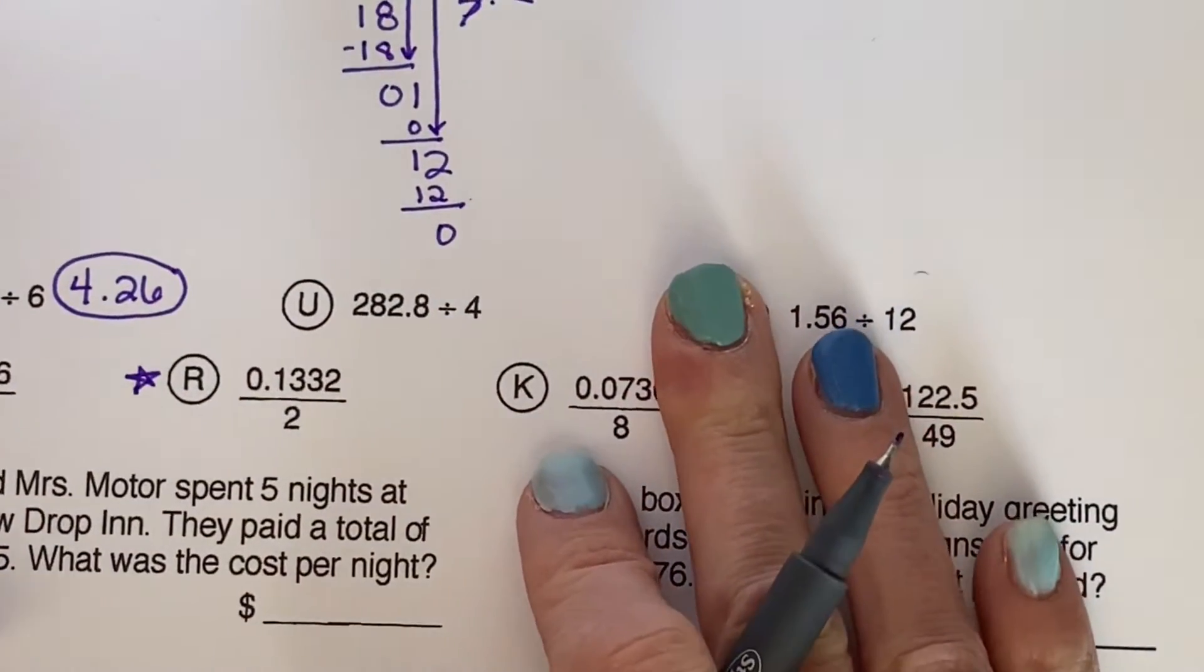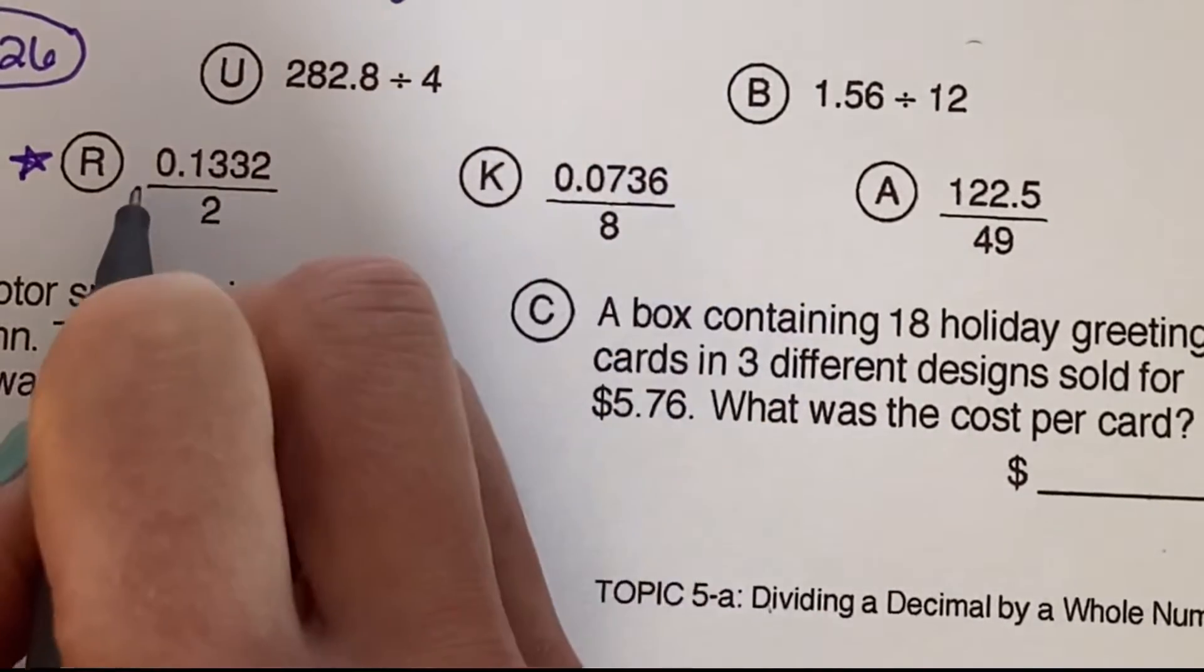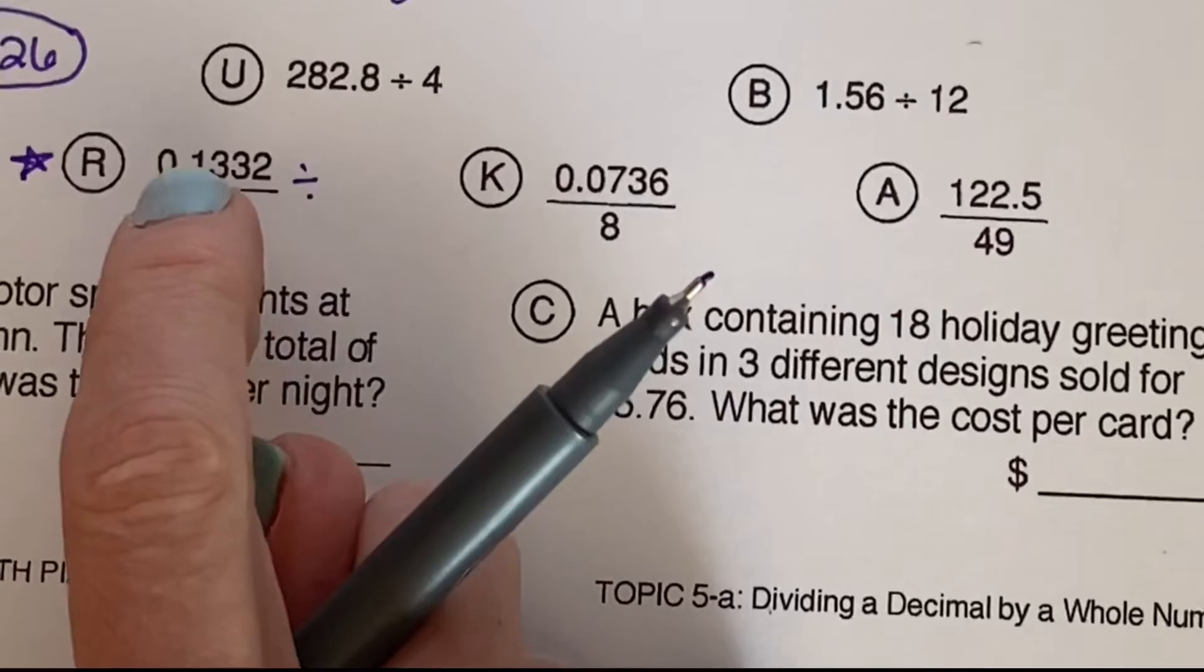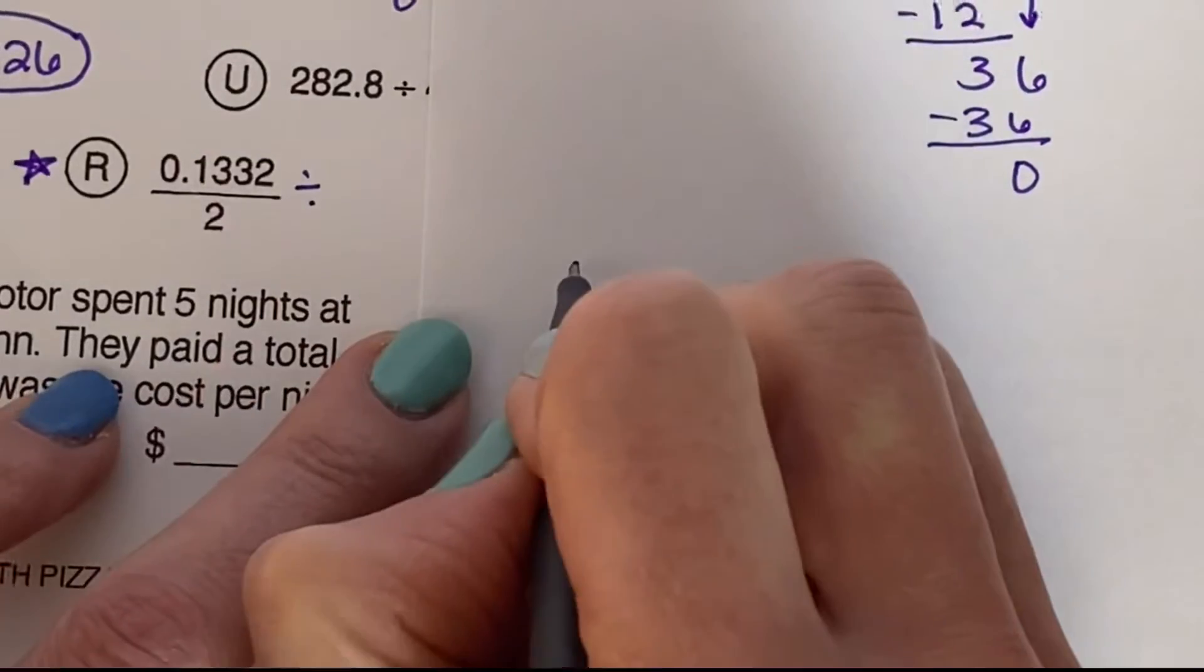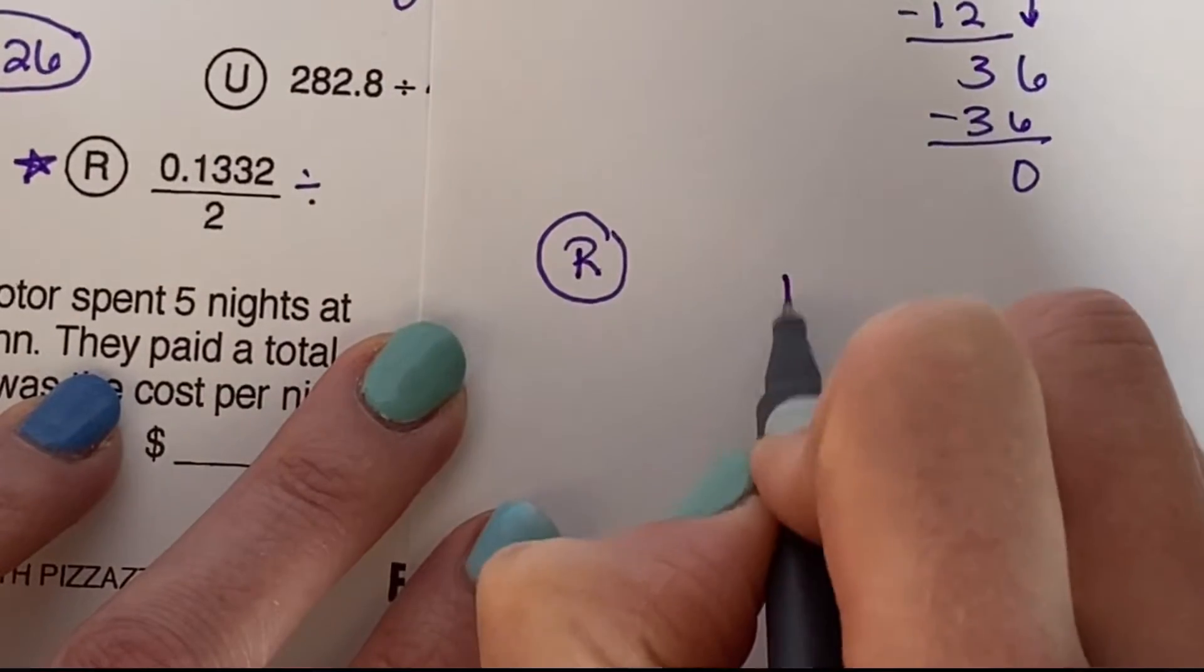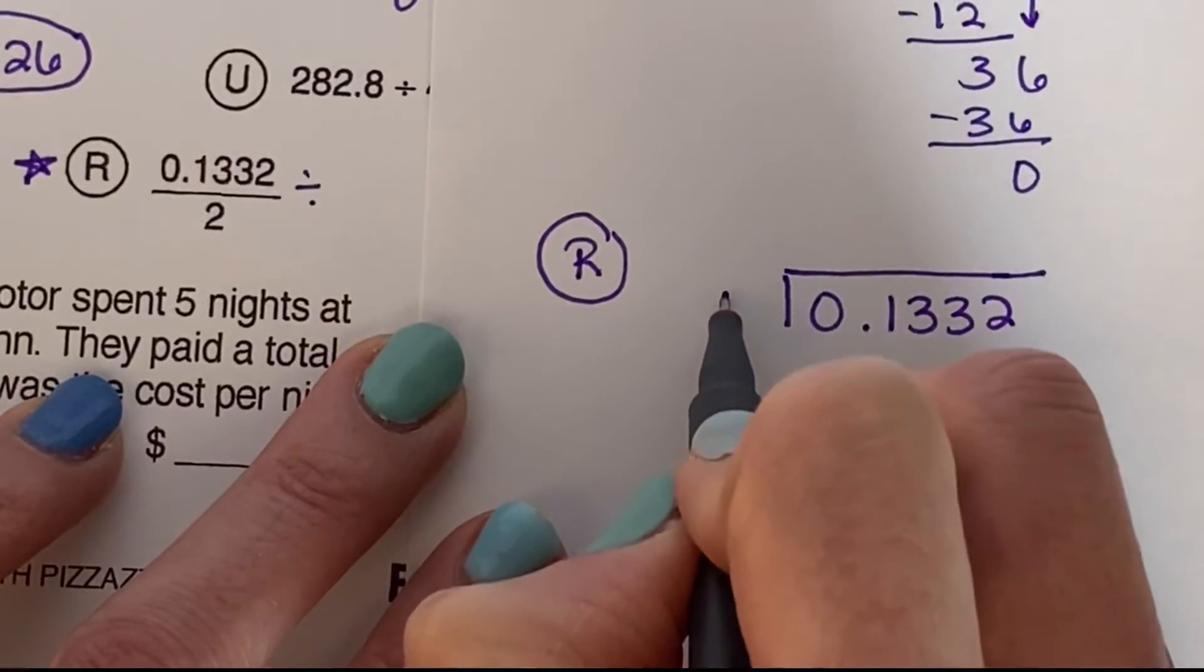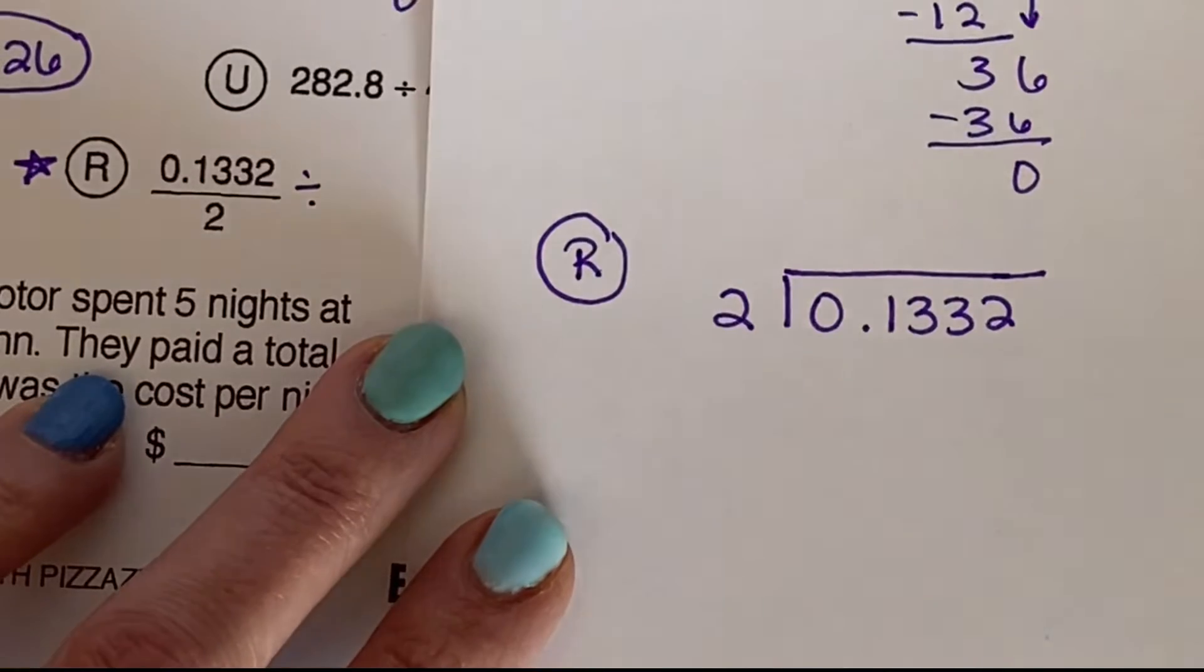Last problem that we will do together. R. Problem number R. Ooh, this one looks slightly different, but we just have to remember that a fraction is a division problem. It's just another way of doing a division problem. And in fact, as we get further on in math, as the years progress, most of our division problems are going to be rewritten as fraction form. So I'm going to go back to my paper. And I'm going to write problem R because I don't have a lot of room over here. Let's see. When I rewrite this, my numerator goes underneath. So that's 0.1332 goes underneath. And my denominator goes on the outside. It's what I'm dividing by. 0.1332 divided by 2.